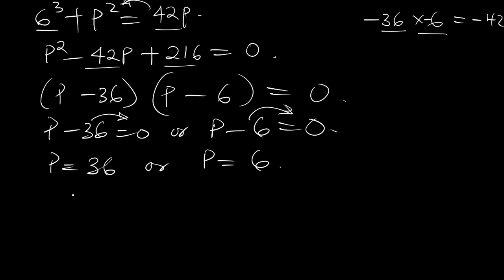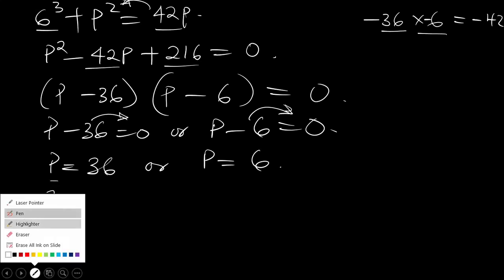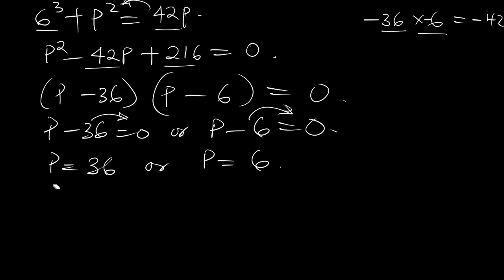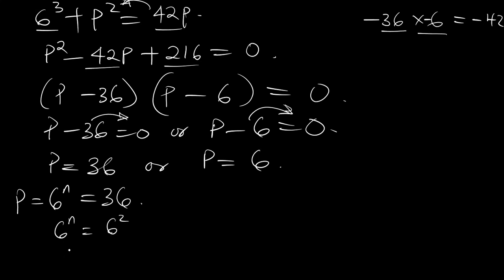Since we let P equal 6 raised to power n, we have 6 raised to power n equal to 36. Now 36 can be written as 6 raised to power 2. So equating the powers, since the bases are the same, we have n equal to 2.